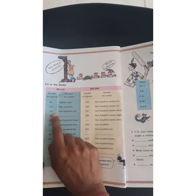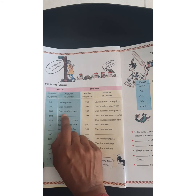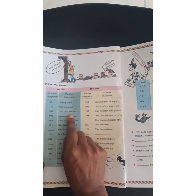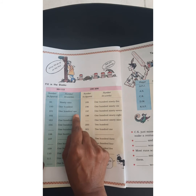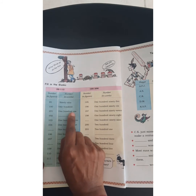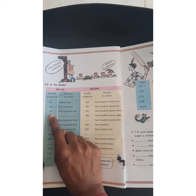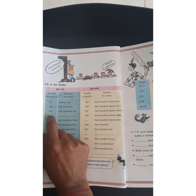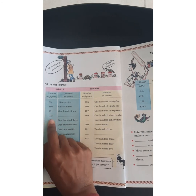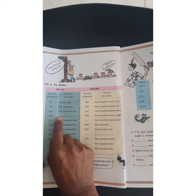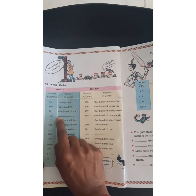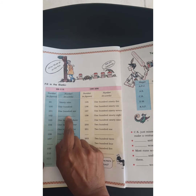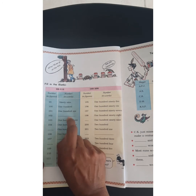101: one hundred one. 102: one hundred two. 103: one hundred three. 104: one hundred four. These numbers are written as one hundred followed by the unit digit.